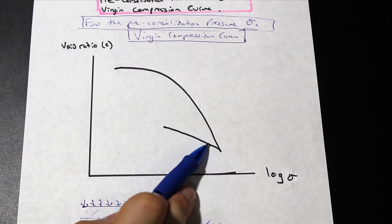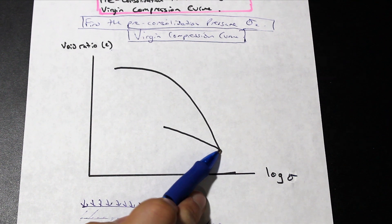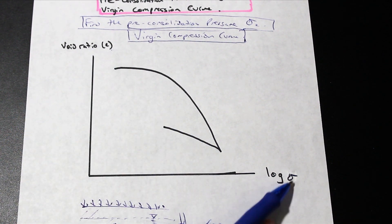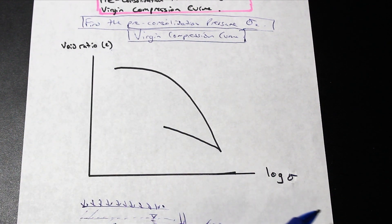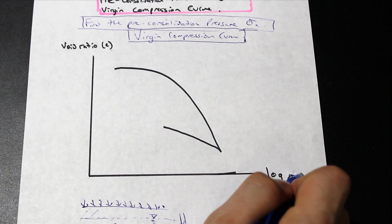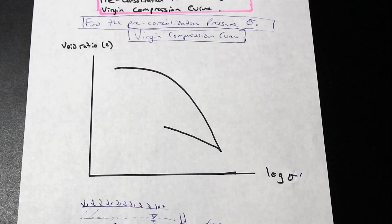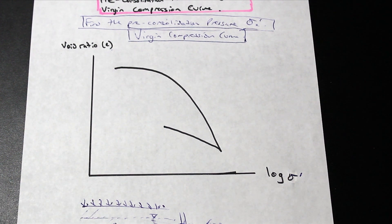and as we unload, slowly, we measure that unloading and how it affects the void ratio and the effective stress relationship. So with that being said, and actually this is sigma prime, we'll say since it's the effective stress, how do we find the pre-consolidation pressure?